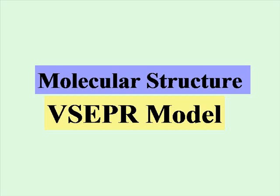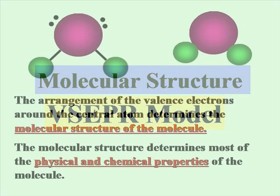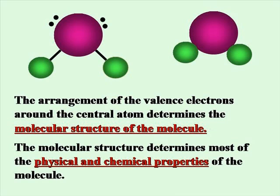Molecular structure is based on the VSEPR model. This stands for Valence Shell Electron Pair Repulsion, and this will describe exactly how the electrons arrange themselves to form the molecule. The arrangement of the valence electrons around the central atom determines the molecular structure, and the molecular structure will determine the physical and chemical properties of the molecule. It is the central atom that controls all of the molecular geometry.